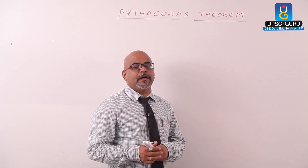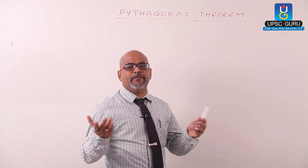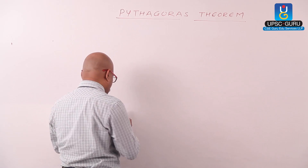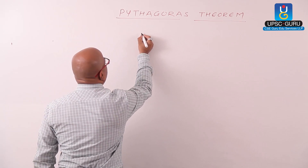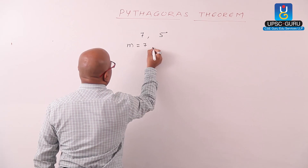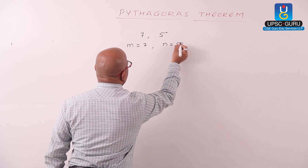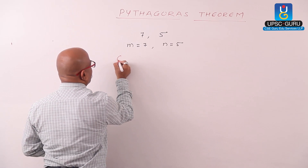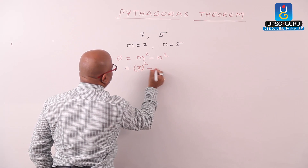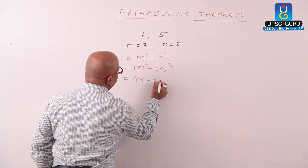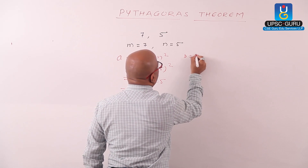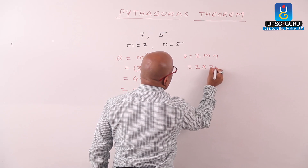Some more ideas about Pythagorean triplets: suppose we are given any two numbers — how do we find a Pythagorean triplet? Let us consider two numbers: m equals 7 and n equals 5. The first number of the triplet, a, is obtained by the formula m squared minus n squared: 7 squared minus 5 squared equals 49 minus 25, which is 24.